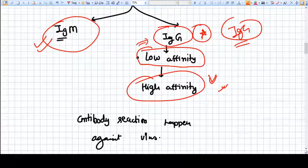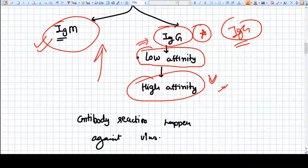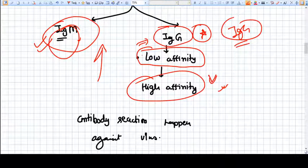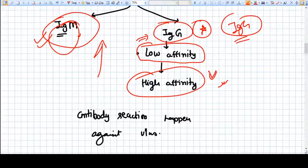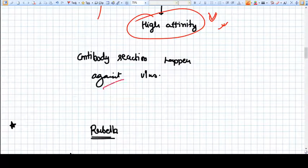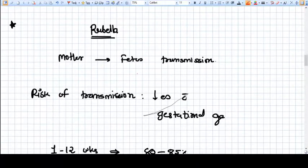So this is a very basic thing. First IgM is formed, then IgG is formed. IgG first has low affinity, then it converts into high affinity. Now, this kind of antibody reaction happens to the viruses. What happens with rubella?